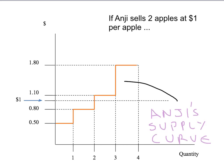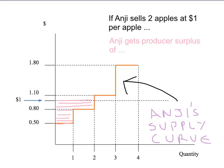So let's say that Anji sells two apples at a dollar per apple, and we have Anji's supply curve, or her marginal cost curve. Then Anji's producer surplus will be the area under the price of a dollar, up to the quantity of apples she sells — two apples — above her supply curve. So Anji's producer surplus is just the pink shaded area here.